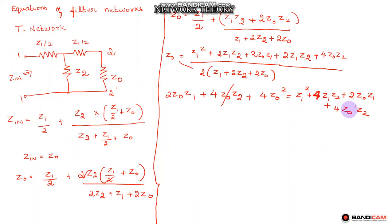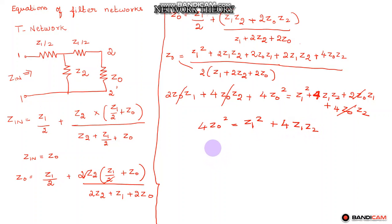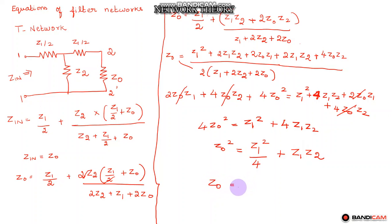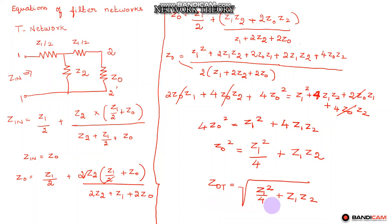We can cancel those two terms, leaving 4Z0² equal to Z1² plus 4Z1·Z2. Further simplifying: Z0² equals Z1²/4 plus Z1·Z2. So Z0 is equal to the square root of (Z1²/4 plus Z1·Z2). This is the characteristic impedance of a T network, written as Z0T equals the square root of (Z1²/4 plus Z1·Z2).